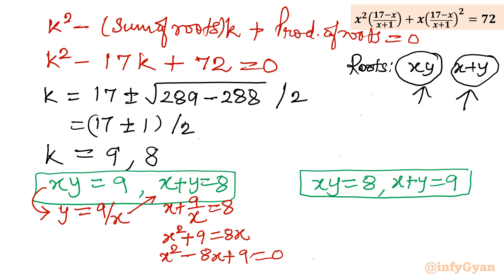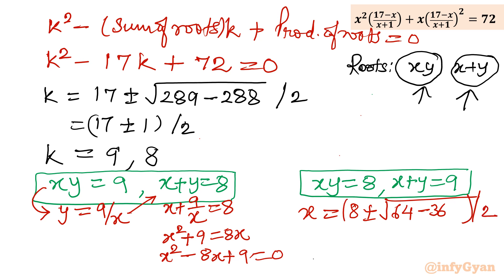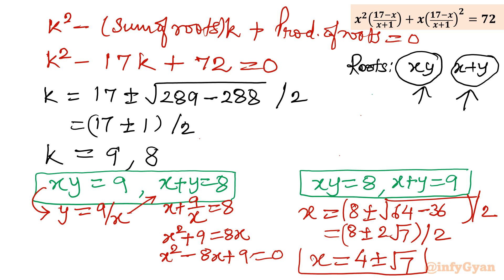Applying the Sridharacharya formula to x² minus 8x plus 9 equals 0: x equals (8 plus or minus √(64 minus 36)) over 2 equals (8 plus or minus √28) over 2 equals (8 plus or minus 2√7) over 2, giving x equals 4 plus or minus √7. Both solutions are real.